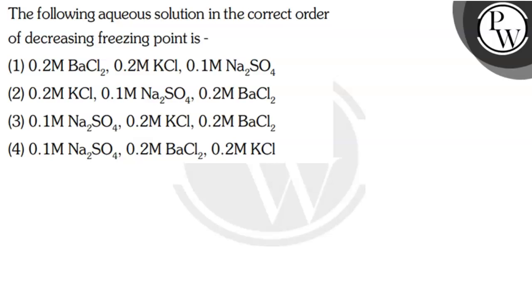Hello, let's read the question. The following aqueous solution in the correct order of decreasing freezing point. The options are: (1) 0.2 molar BaCl₂, 0.2 molar KCl, 0.1 molar Na₂SO₄; (2) 0.2 molar KCl, 0.1 molar Na₂SO₄, 0.2 molar BaCl₂; (3) 0.1 molar Na₂SO₄, 0.2 molar KCl, 0.2 molar BaCl₂; and (4) 0.1 molar Na₂SO₄, 0.2 molar BaCl₂, 0.2 molar KCl.